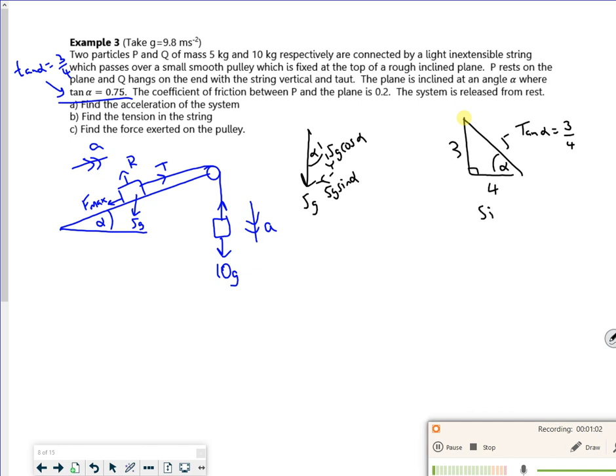So that tells me then that sine alpha is 3/5 and cos alpha is 4/5. The 5g cos alpha is 5g times 4 over 5 which is just going to give me 4g.